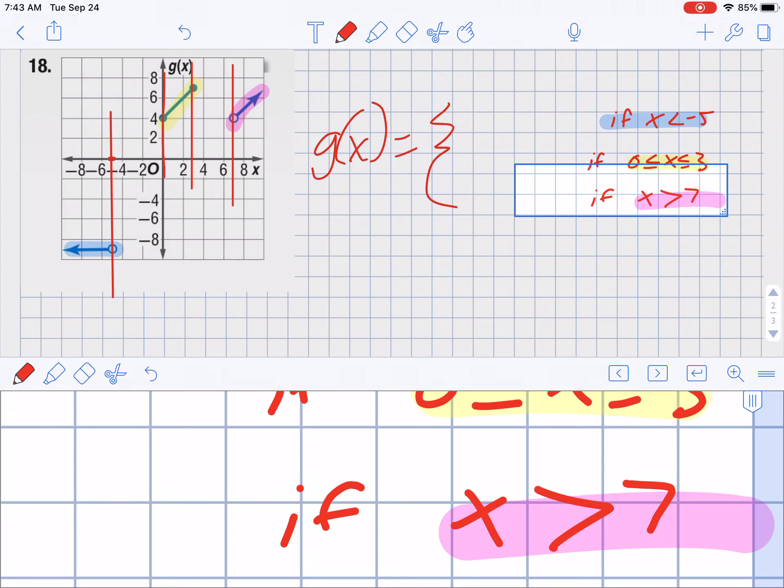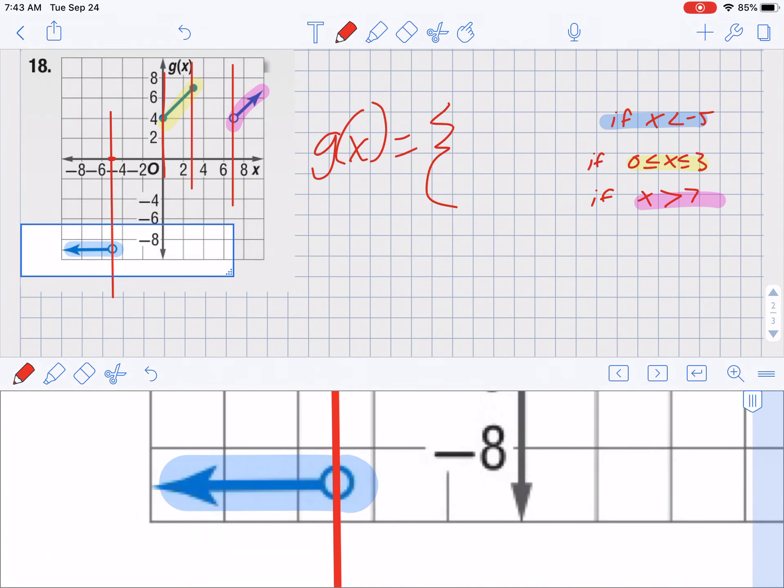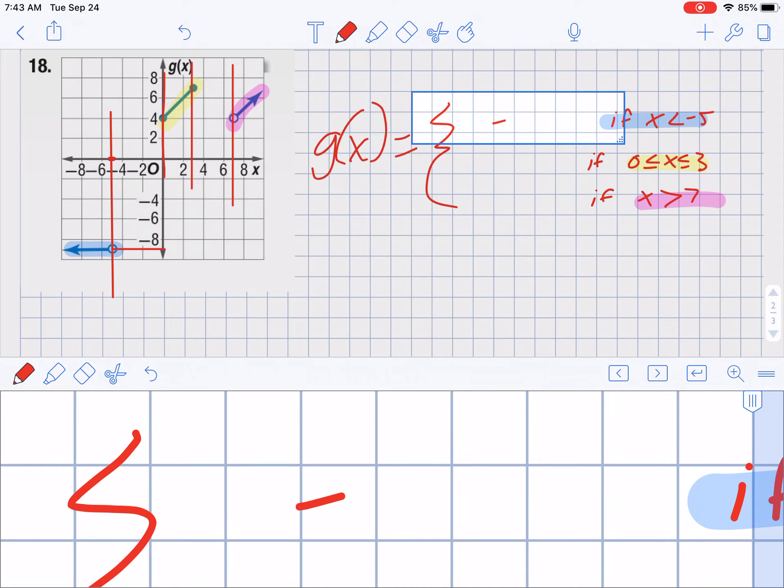Now it's just a matter of writing the equations. This first one's pretty simple. It's a horizontal line. It crosses right there at where Y equals negative 9. And so that's my equation for the first one, just negative 9. The slope is 0 for a horizontal line.